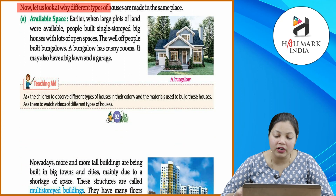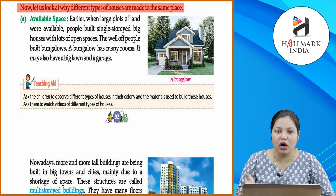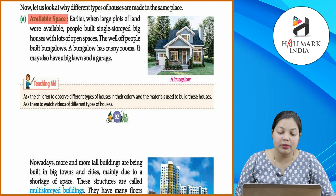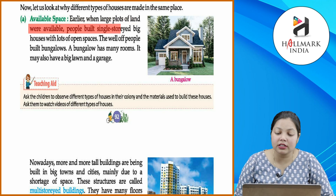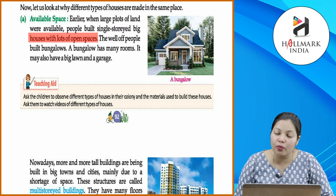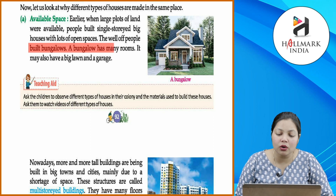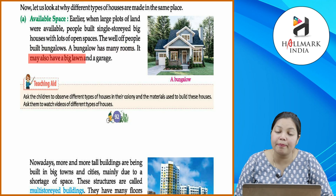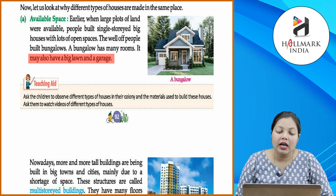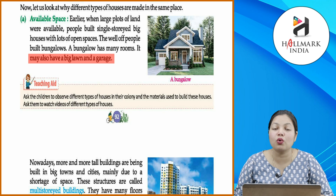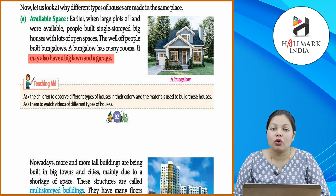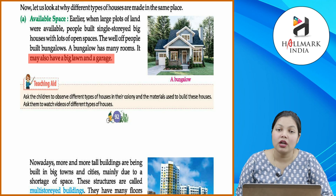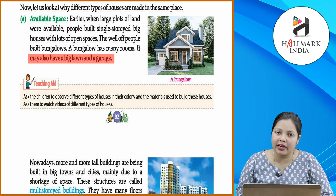Let us look at why different types of houses are made in the same places. Available space: earlier, when large plots of land were available, people built single storey big houses with lots of open spaces. The wealthy people built bungalows. A bungalow has many rooms and may also have a big lawn or a garage. Pehle ke log apne gharon ko bilkul khule space mein banaya karte the, aur jinke paas zyada paise hote hain wo bungalows banate hain, jinmein bahut saare rooms hote hain aur lawn ya phir garage bhi hota hai.